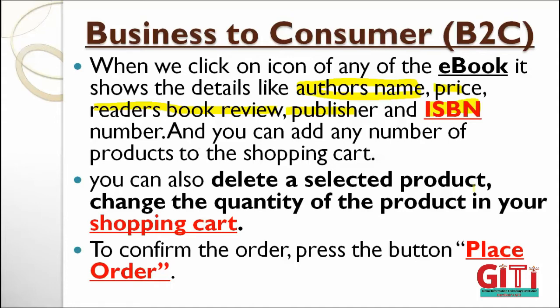Homework: go to Google and find out what ISBN means and its full form — it is a standard mark for all online book purchases worldwide. Next, you can delete and select the product, change the quantity in your shopping cart. The shopping cart allows you to delete, unselect, or adjust quantity (plus/minus) of items. For example, if at billing time you notice there is no discount on a product, you can remove or modify it in the cart — represented by a small trolley symbol.